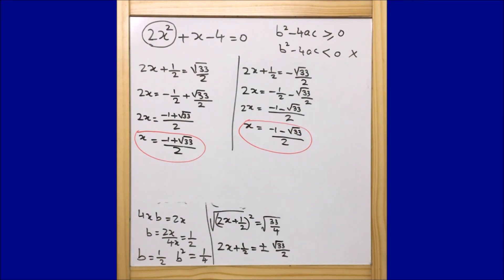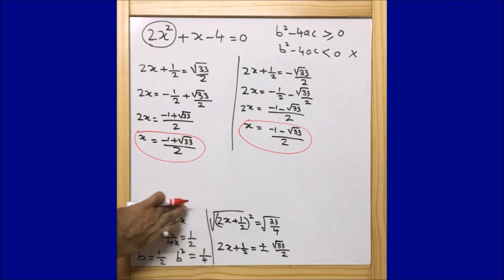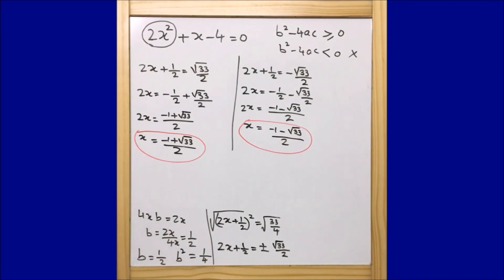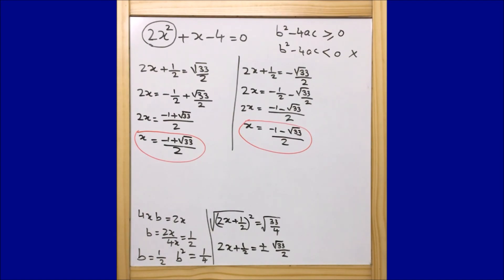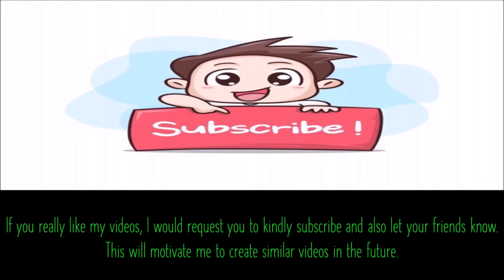This is how we solve a quadratic equation using the completing the square method. The key is understanding how to convert the expression into the (a + b)² form. If you have any questions or doubts, please reach out in the comment section. If you like my videos, please subscribe and share with your friends — it motivates me to create more videos. Thank you, bye.